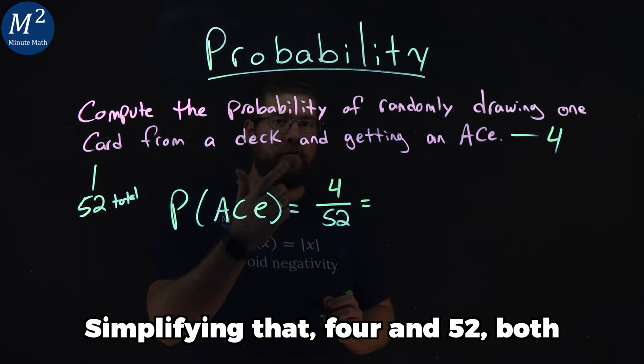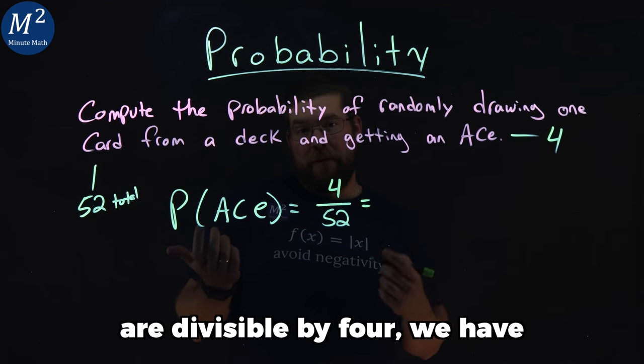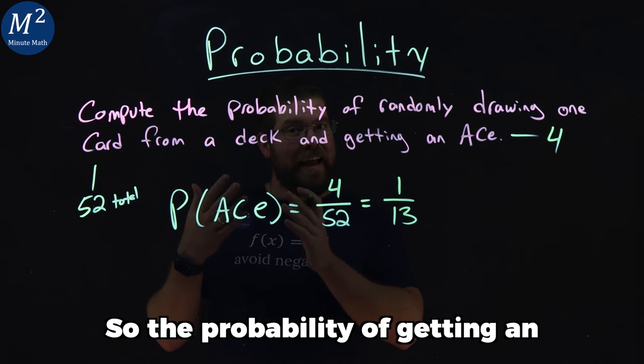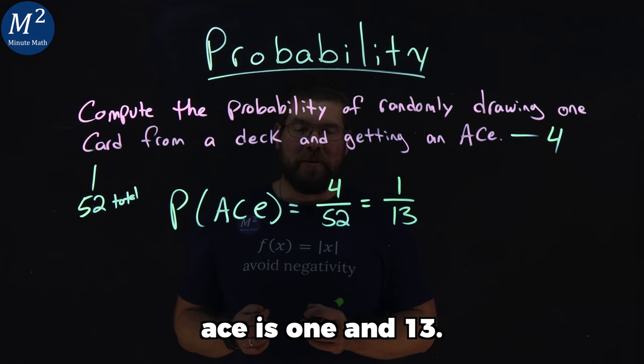Simplifying that, 4 and 52 are both divisible by 4, which gives us 1 and 13. So the probability of getting an ace is 1 in 13.